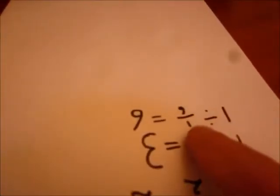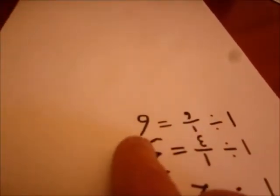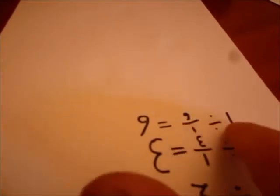Okay, so one divided by a sixth is six. How do you know? Because a sixth goes into one how many times? Six times. Six times.